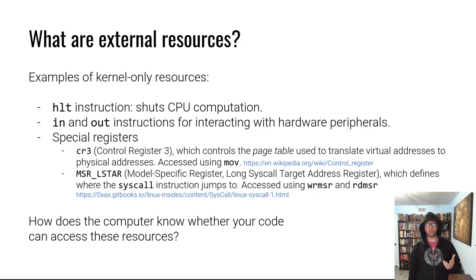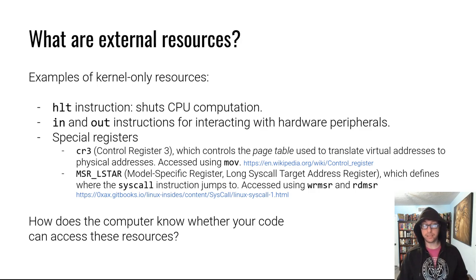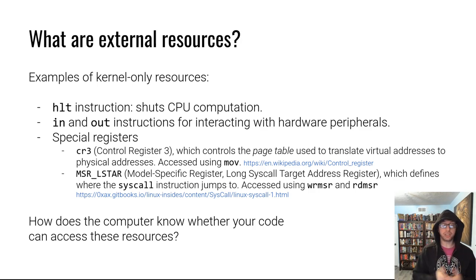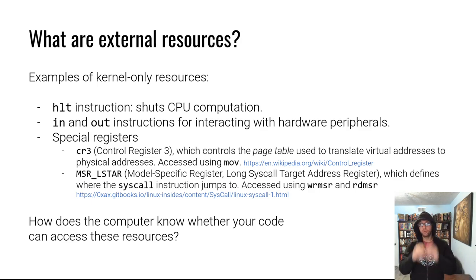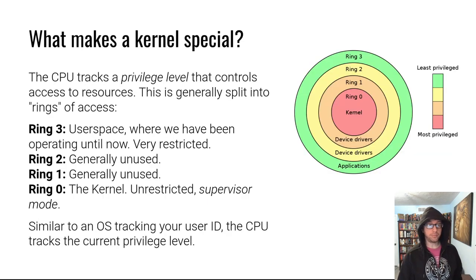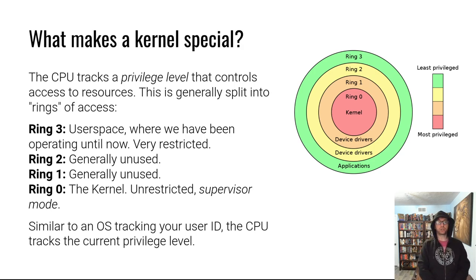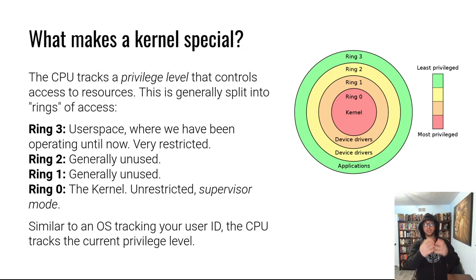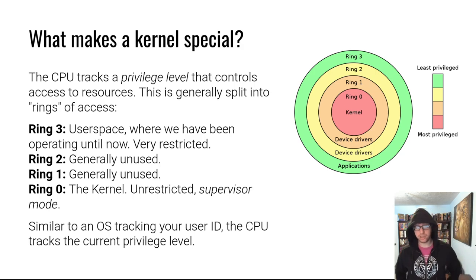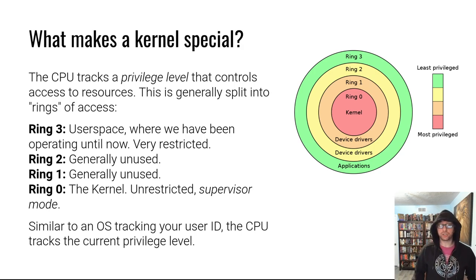How does your computer know if you are allowed to touch the CR3 register? If you do MOV CR3, RAX, how does it know whether to let you do that? The CPU, as it's executing, tracks the privilege level at which you are currently executing. This privilege level is split into rings — this is an x86-centric view of things.